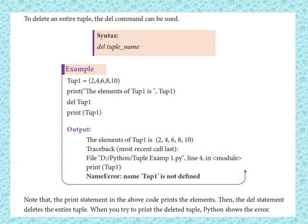Delete tube one: first print the tuple, then use del tube one to delete it. Then call the print function again after deletion.